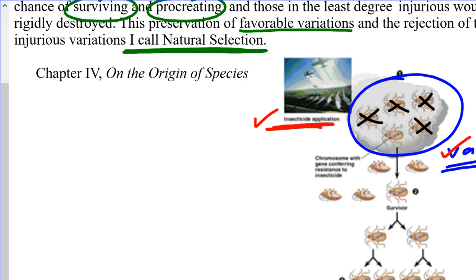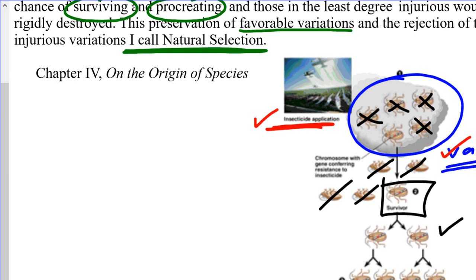The mutation just did not provide any selective advantage to those beetles until we started applying insecticide. Upon application, a whole bunch of these beetles are susceptible and they die. But a few — the lucky ones — suddenly become the fittest individuals because they are the only ones that survive. They already had a mutation enabling them to survive, so they get to reproduce. With each successive generation, more and more of these insects will be resistant to the insecticide.